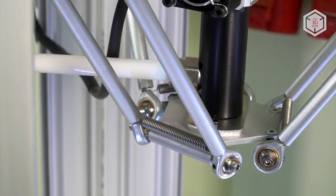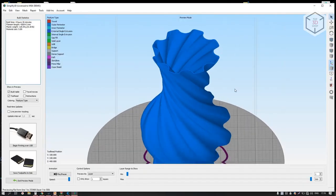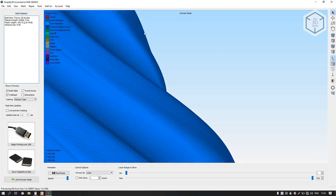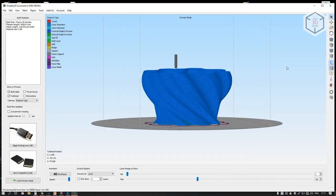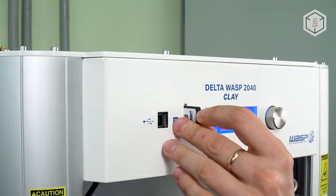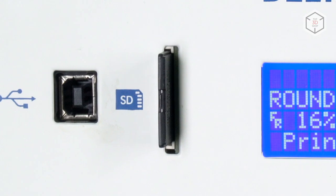The compressor of the required capacity should be acquired separately. You are not limited in choosing software for preparing models for printing. Software such as Cura, Slicer, or Simplify3D will work great. The G-code can be transferred into the printer's memory via USB connection or an SD card.